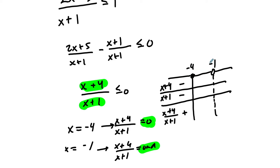Now, when I pick numbers between negative 4 and negative 1, I'll pick negative 2. Negative 2 plus 4 is a positive. Negative 2 plus 1 is a negative. And a positive divided by a negative is a negative. Over here, I'll pick 0. We get a positive. 0 plus 4 is positive, 0 plus 1 is positive, and that's positive.